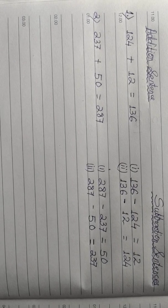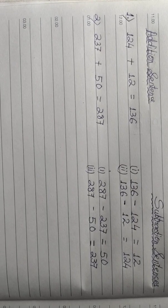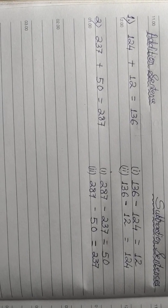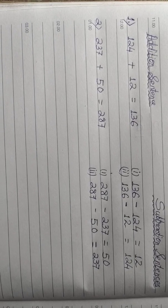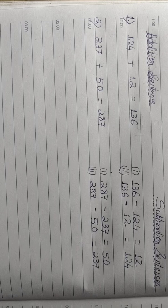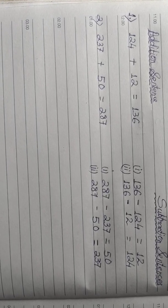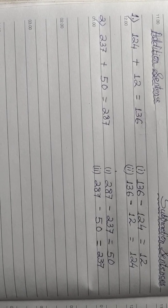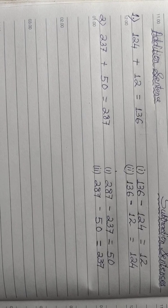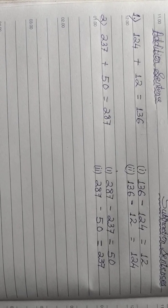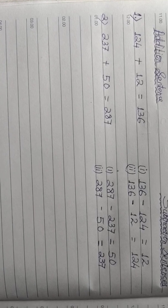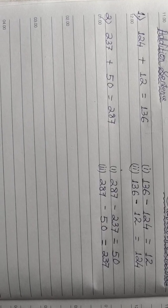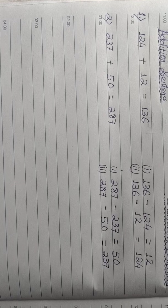Our answer in the addition sentence is 287. To make the subtraction sentence, this 287 — the answer — is to be written on the left side, minus one addend at a time. The two addends in the addition sentence are 237 and 50. So the answer 287 minus the first addend 237 equals to the other number remaining, which is 50. Similarly, the answer 287 minus the second addend 50 equals to the remaining number, 237.